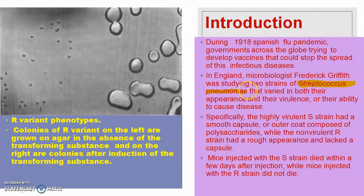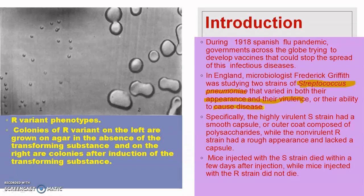Streptococcus pneumoniae has two different strains: one is a virulent strain, and another is a non-virulent or non-pathogenic strain. Both strains studied by Frederick Griffith differ in their appearance and virulence — that is, their ability to cause disease.